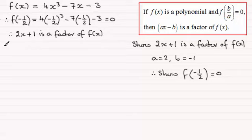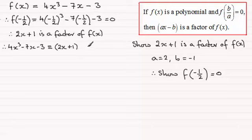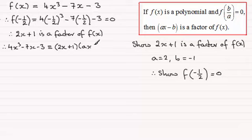That means therefore that 4x cubed minus 7x minus 3 must be identical to 2x plus 1 multiplied by another factor. That factor would have to be a quadratic factor if we're to get x cubed as the highest power, so we'll say it's something of the form ax squared plus bx plus c.